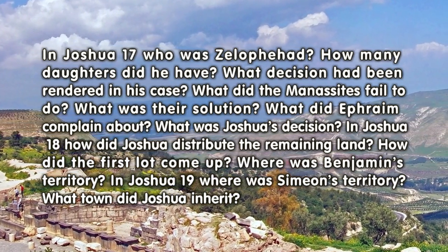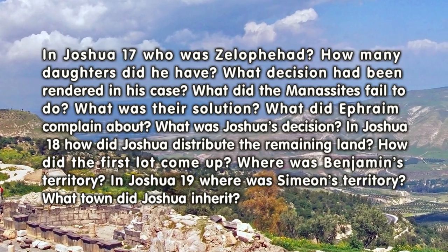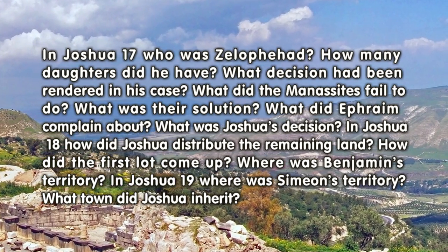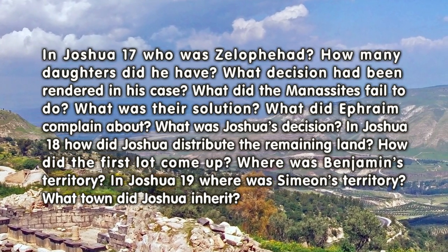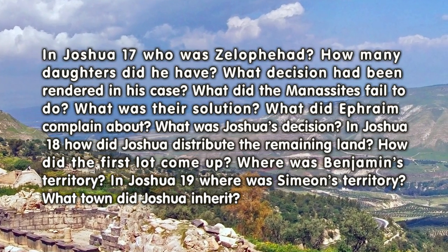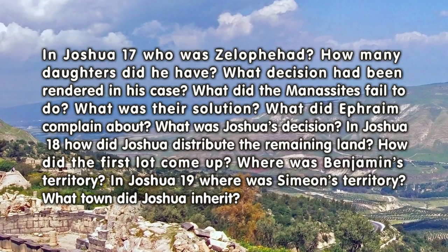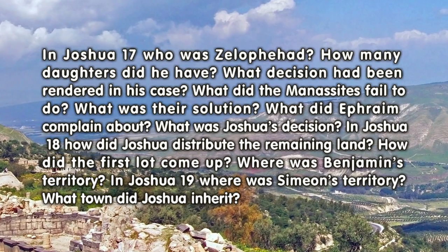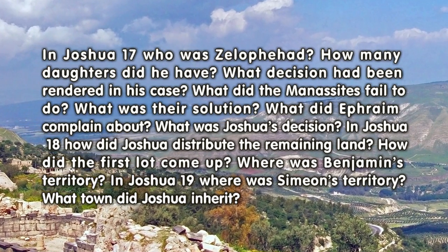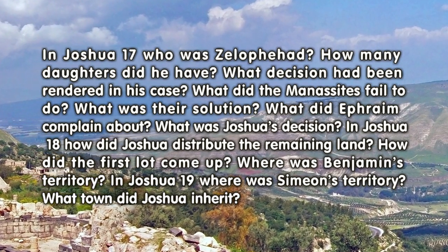In Joshua 18: How did Joshua distribute the remaining land? How did the first lot come up? Where was Benjamin's territory?